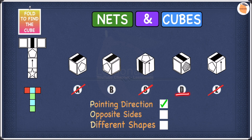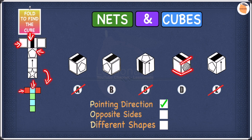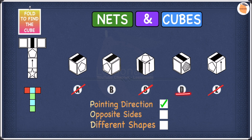Now let's move to D. In D we have a pentagon, a square, and a stripe. Looking at the net, the stripe is at the top, then the pentagon, then the square. In the opposite sides diagram, these three shapes are all on different colors, meaning none of them are on opposite sides. So we can keep D. We managed to cross off C, so we put a tick next to opposite sides. We're now left with B and D — let's move to different shapes to find the answer.